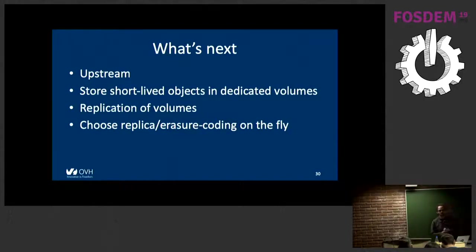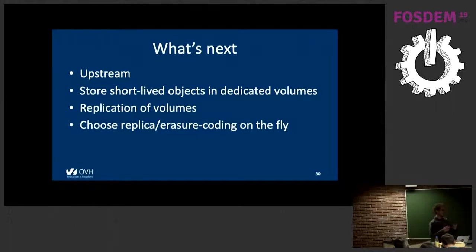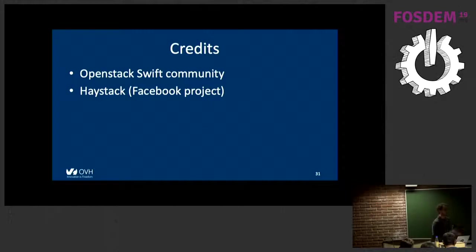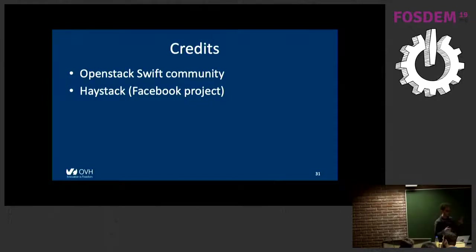Future work includes: storing short-lived objects in dedicated volumes (some code is already there but not activated); replication of entire volumes — currently we rely on per-object Swift replication, but when topology changes require moving a partition, it could be more efficient to move the whole volume rather than thousands of individual objects. Additionally, erasure coding is not efficient for very small objects, because the smallest allocatable block on a modern drive is 4K, and with 15 fragments that means at least 15 times 4K. We'd like to work on that. Finally, thanks to the OpenStack Swift community and to Facebook for publishing their Haystack paper, which gave us the initial idea of storing files within larger files.